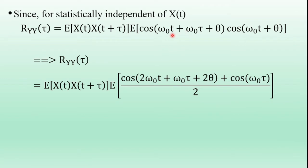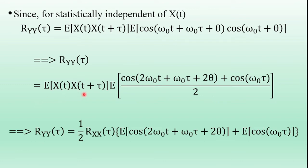For the second expectation term, we multiply numerator and denominator by 2 and apply the identity 2cosA·cosB = cos(A+B) + cos(A−B). Here A = ωₒt + ωₒτ + θ and B = ωₒt + θ. So cos(A+B) = cos(2ωₒt + ωₒτ + 2θ) and cos(A−B) = cos(ωₒτ), since ωₒt and θ terms cancel. The first expectation E[X(t)·X(t+τ)] = R_XX(τ). Thus we get (1/2)·R_XX(τ)·[E[cos(2ωₒt + ωₒτ + 2θ)] + E[cos(ωₒτ)]].